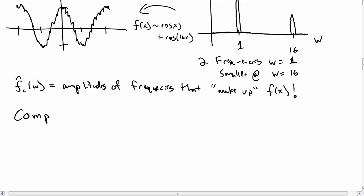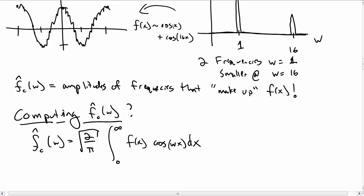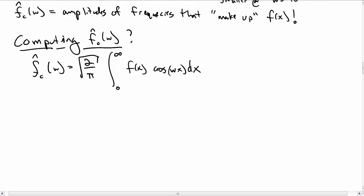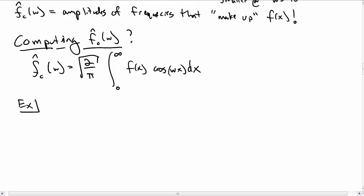So now that we know what f̂_c(ω) is, or what the Fourier cosine transform is, how do we compute this thing? There's some expression involving another integral. There's a square root of 2 over π, integral 0 to infinity, the function f(x), cos(ωx) dx. It kind of looks like the integrals we used when we did Fourier series.